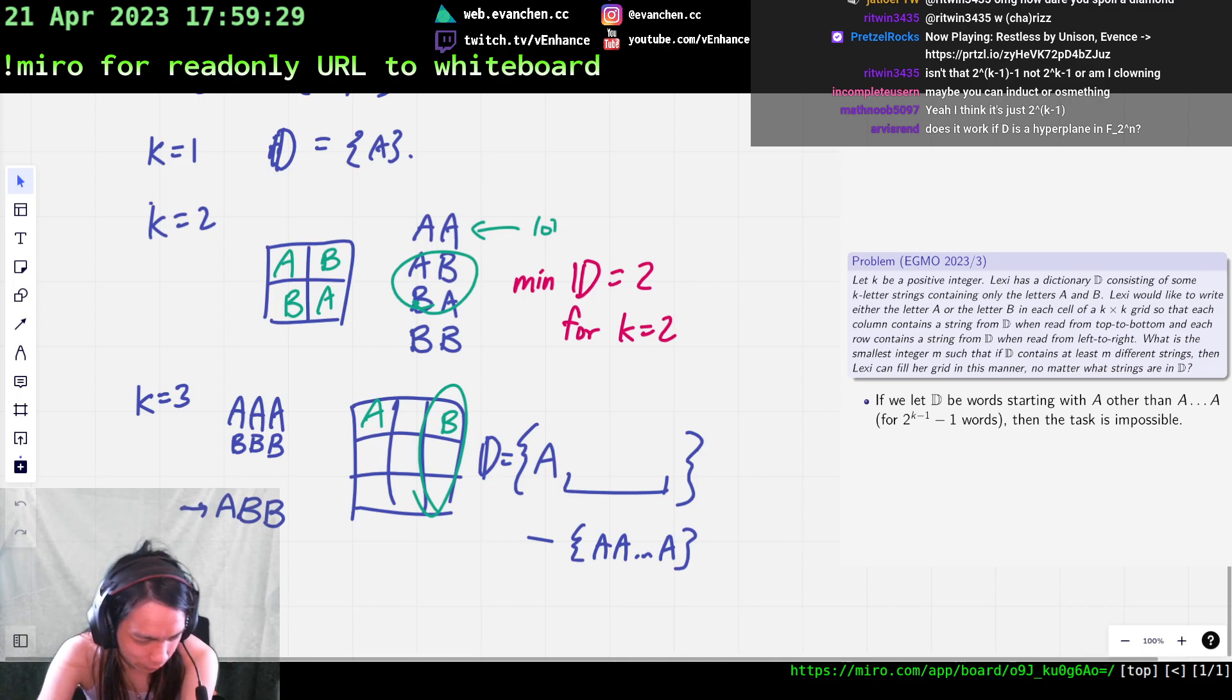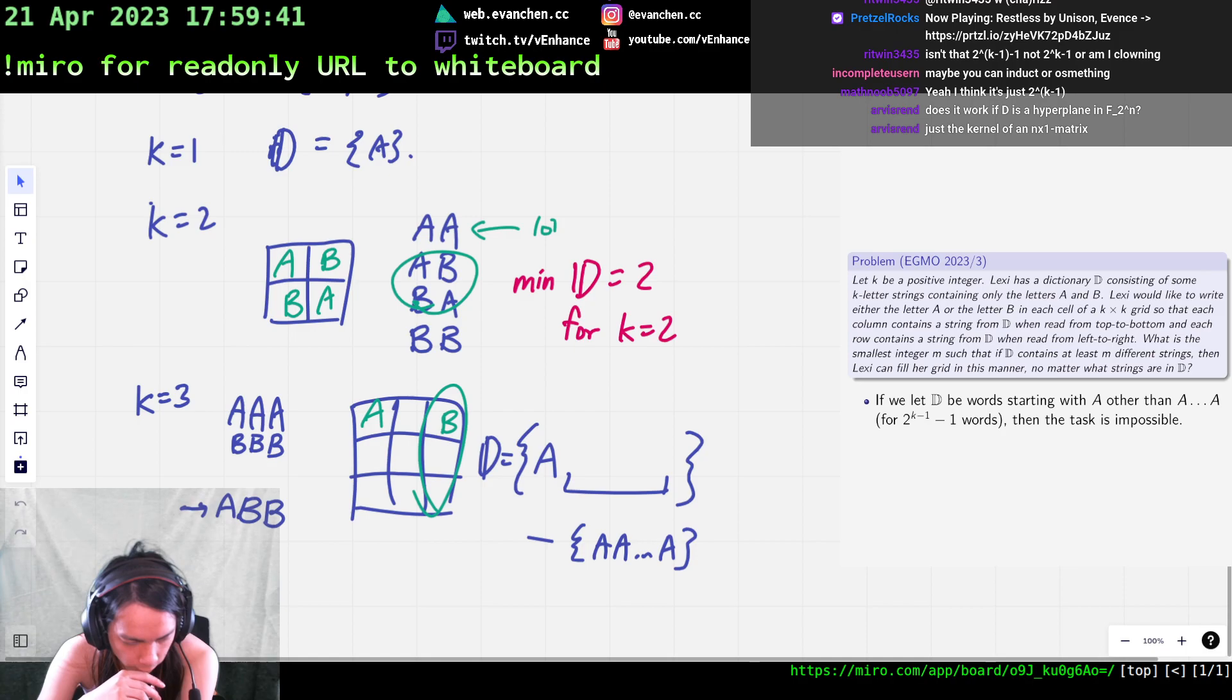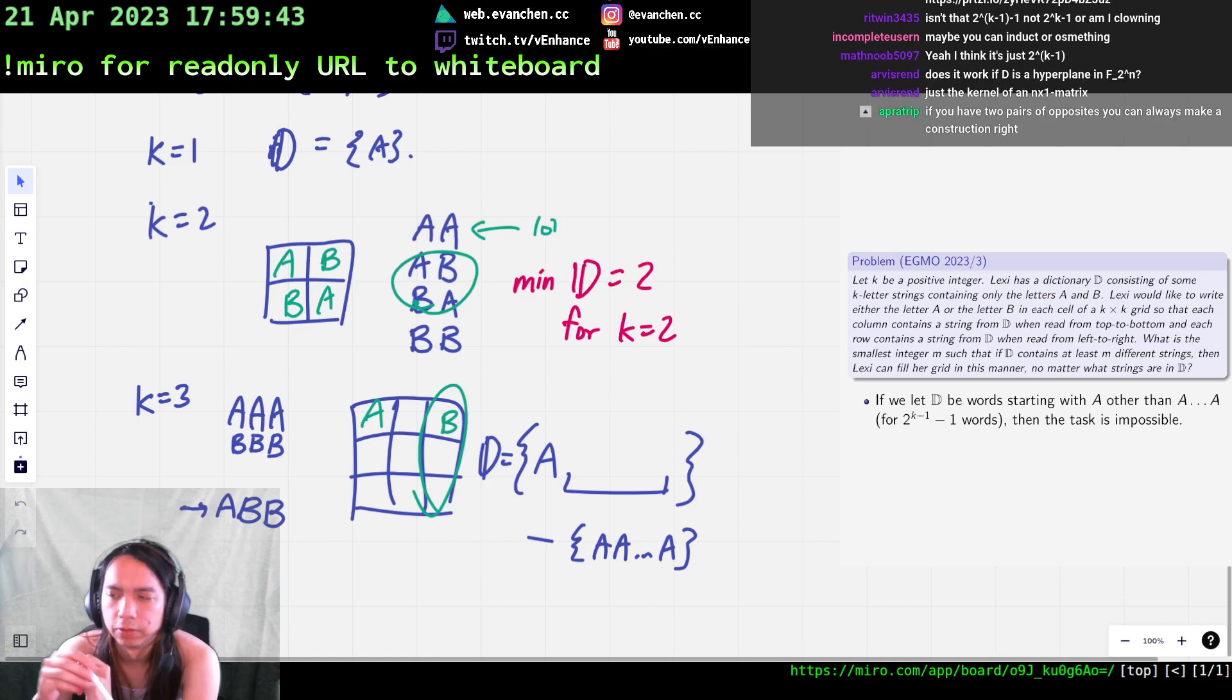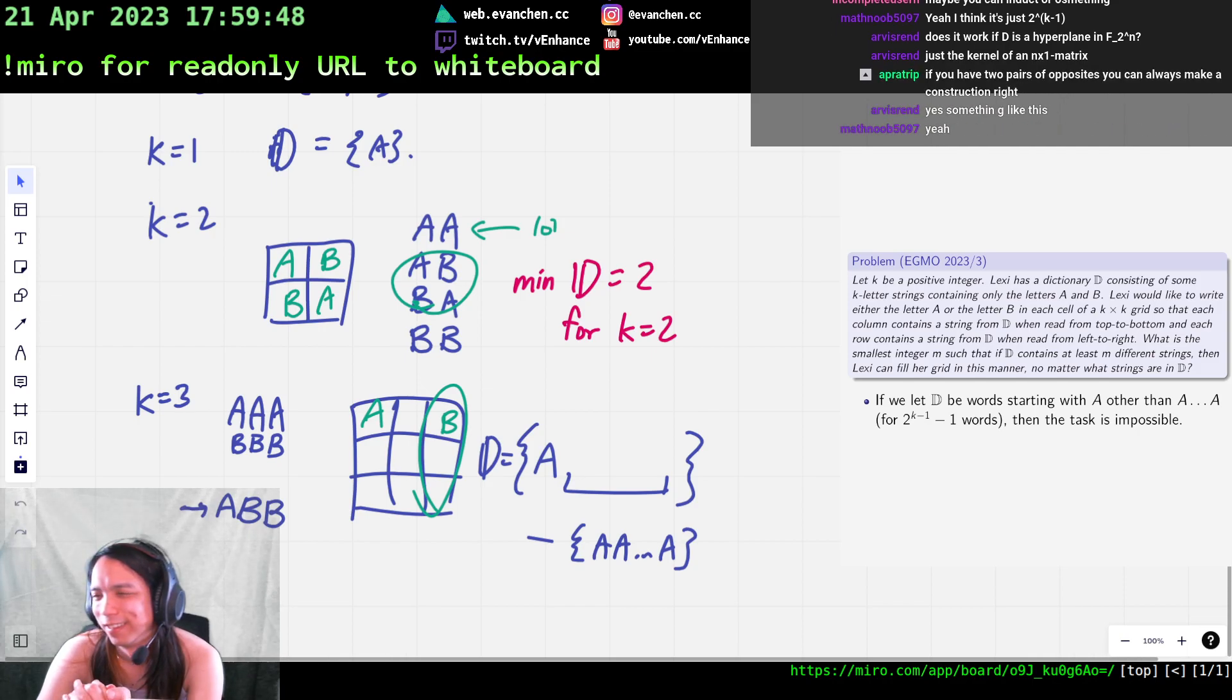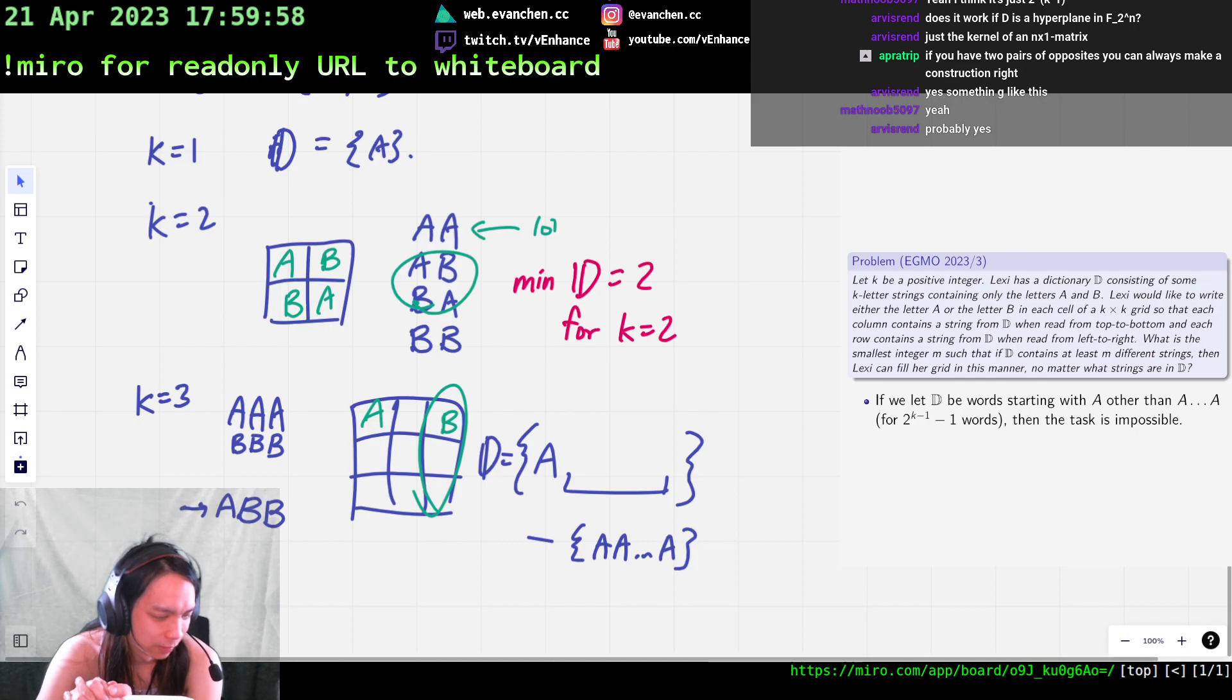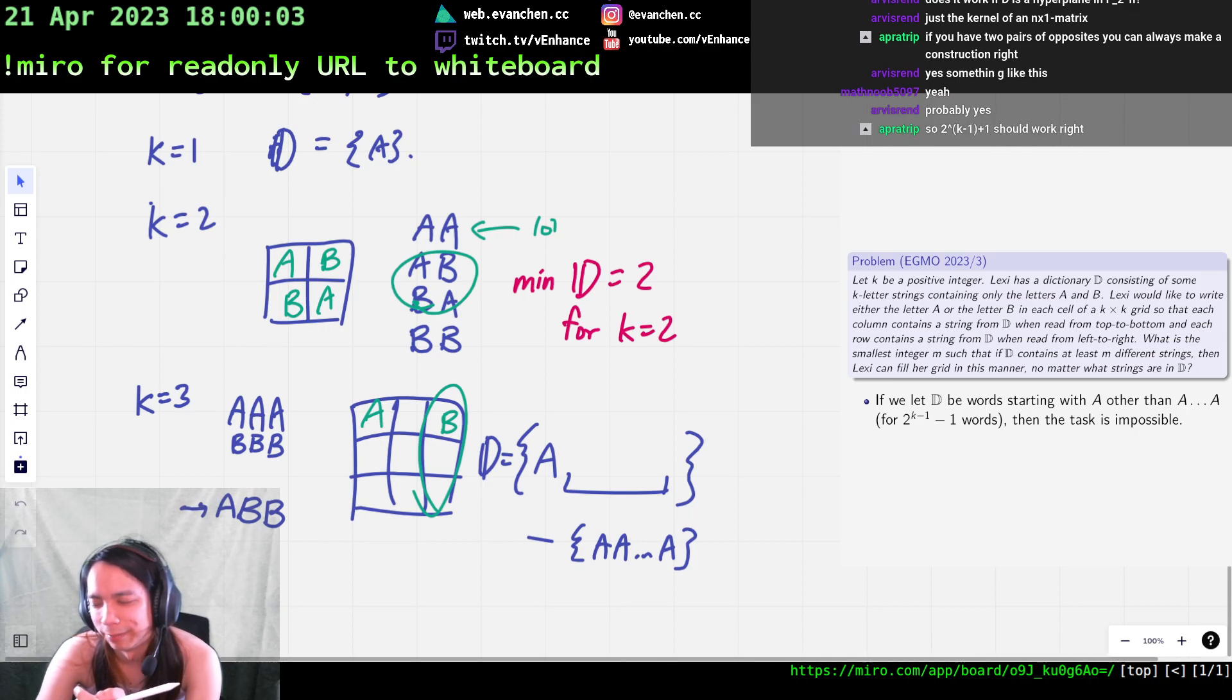Does it work if D is a hyperplane in F2 to the end? What is a hyperplane? Like, let's say you take the set of things for which the number of A's is even or odd, or just the kernel of some matrix. Maybe? If you have two pairs of—oh, oh, the opposites will do it. Oh, goddammit.